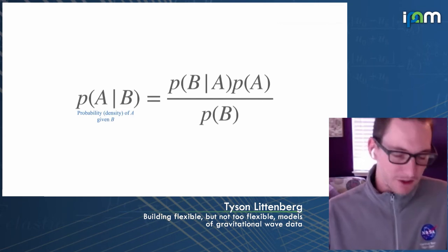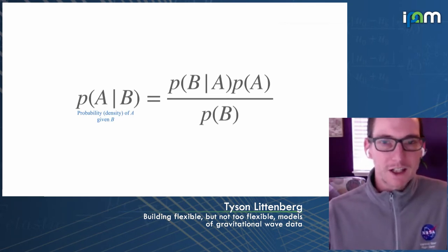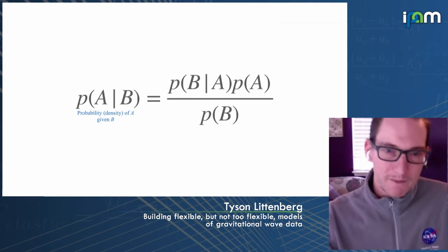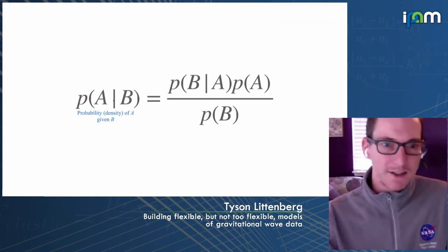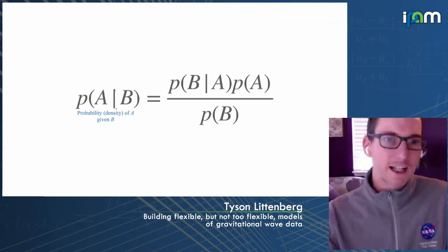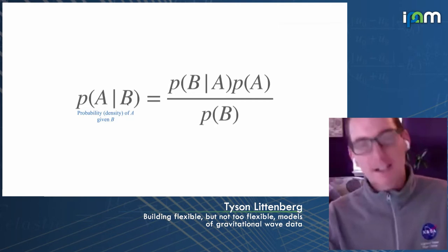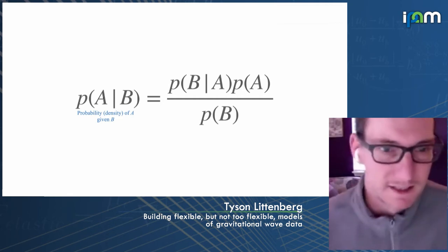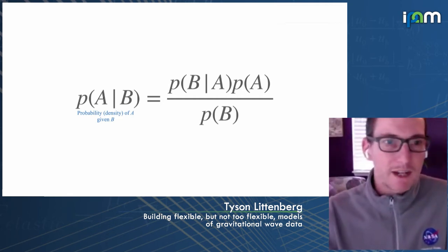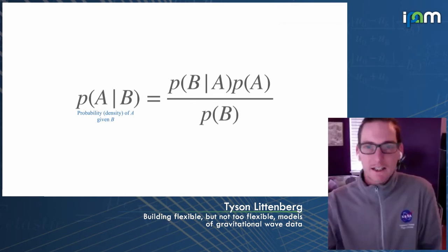You have to start off with Bayes' theorem, which tells you how conditional probabilities interact with one another. We'll see lots of these lowercase p-type functions throughout the course of the day. For the uninitiated: when you see a vertical bar in the argument of the probability density, the thing on the right-hand side of the bar is considered 'given,' and the thing on the left is the dependent variable.